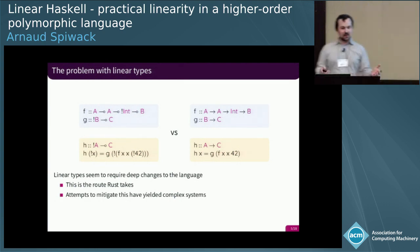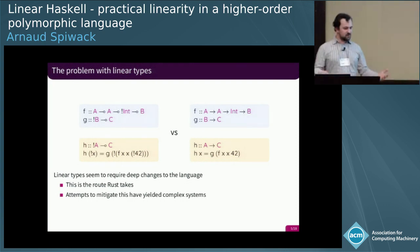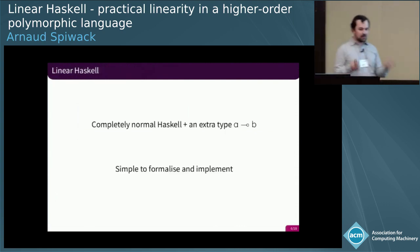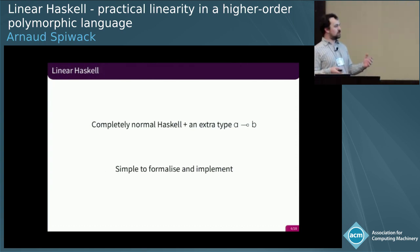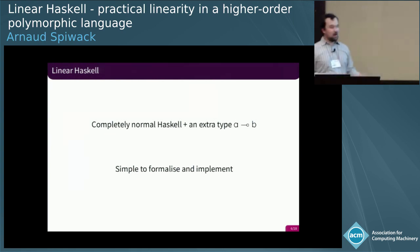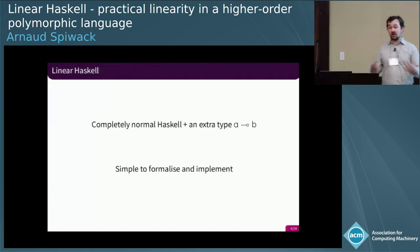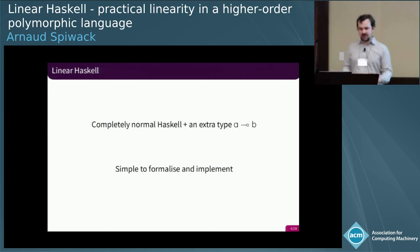But it turns out Jean-Philippe Bernardi, who was one of the pictures at the beginning, came up with fairly strong ideas and convinced me this could be done. We started doing this, and what we came up with is something as simple as what I wrote on this slide. We add one type to Haskell, and it's mostly orthogonal to all the other features. So it's fairly easy to formalize, fairly easy to implement. And that's the goal.